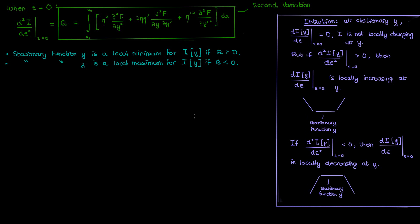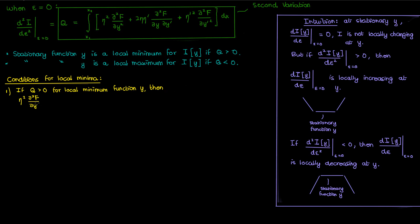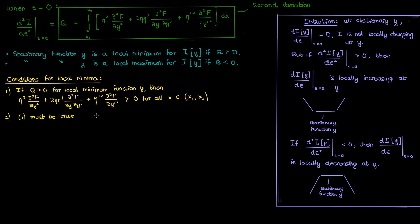Using this intuition we can propose conditions for stationary functions to be local minima. In order to guarantee that the integral Q be positive for a local minimum function y, we can propose that the integrand must be positive for all values of x between x1 and x2. This guarantees that the integral Q is also always positive. Another important condition is that this integrand must be positive no matter what non-trivial η we pick, as long as that η satisfies the boundary conditions where its value at the limits of integration is zero and η is not identically zero.